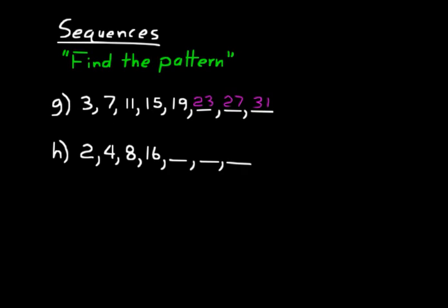For practice problem H, pause the CD and figure out the next three numbers in that sequence. Each subsequent number is multiplied by 2 — multiply the previous number by 2 to get the next one. So 16 times 2 is 32, 32 times 2 is 64, and 64 times 2 is 128. Those are the next three numbers.